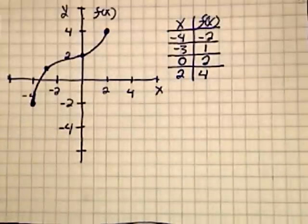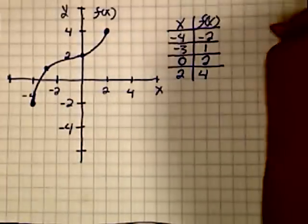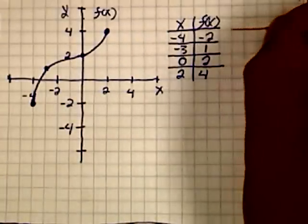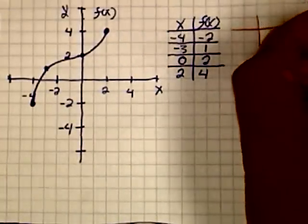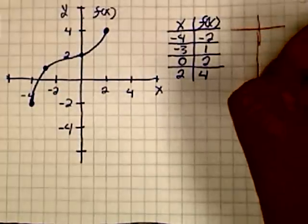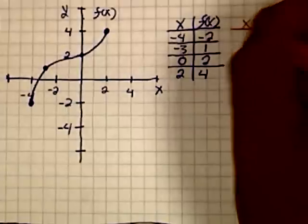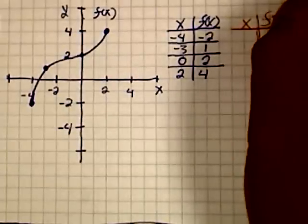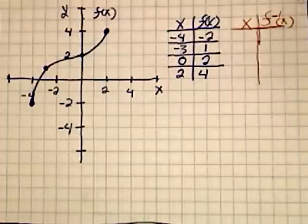To get the graph of the inverse, I will need some points to plot. I will get those points by taking the table I have right now and flipping the x and y values. That will give me the inverse of the function.